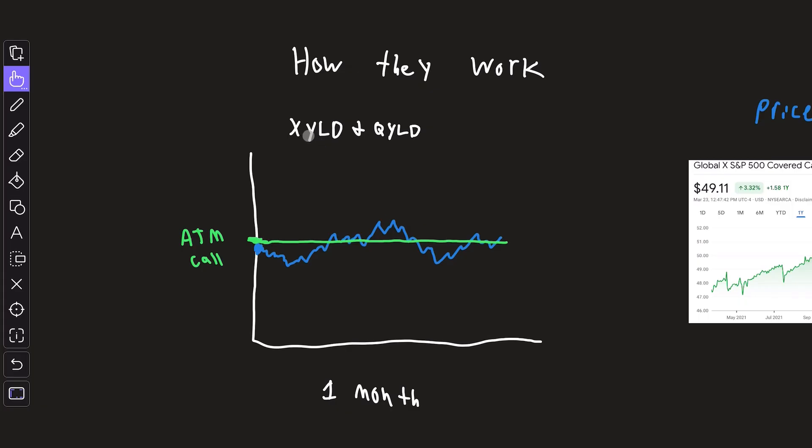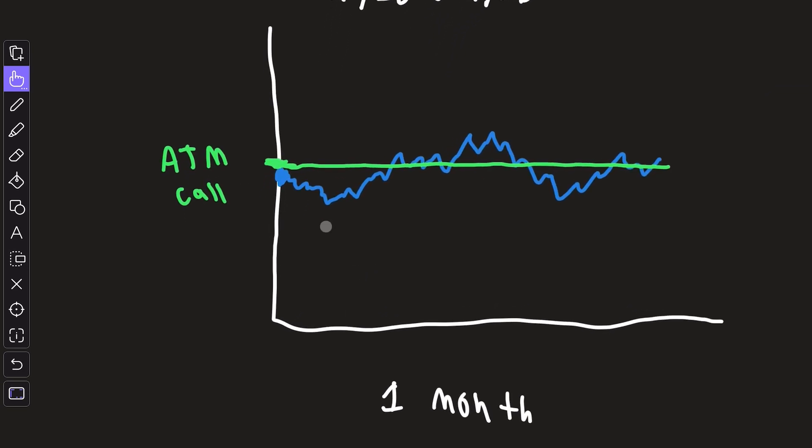When it comes to XYLD, QYLD, and RYLD, they all operate exactly the same way, just based off of a different index. What they do is every month they sell at-the-money call options on their respective index. And that's it, very simple.